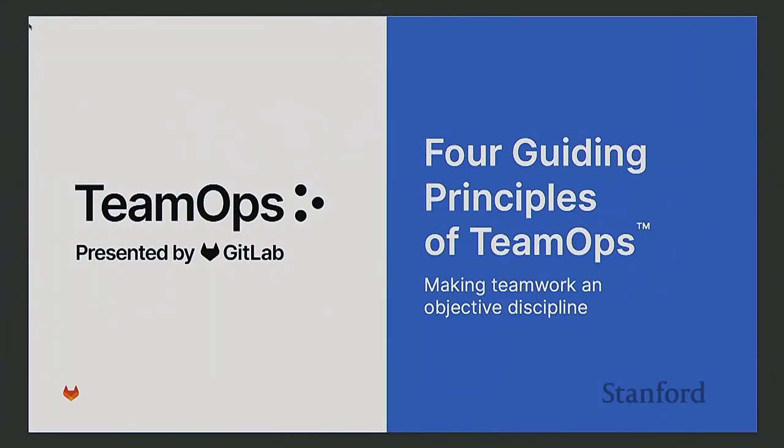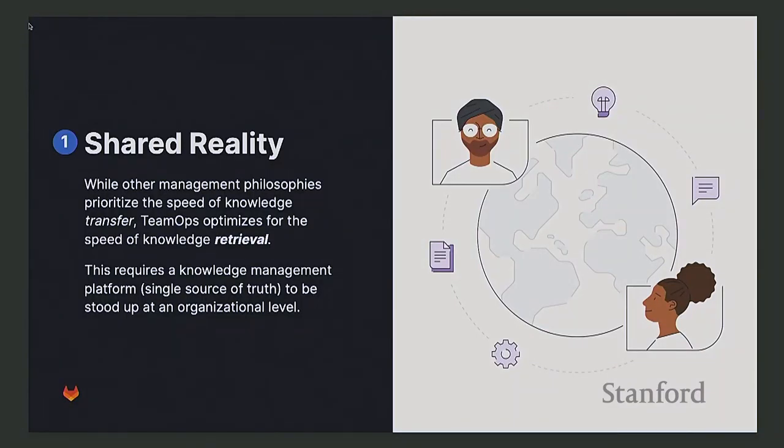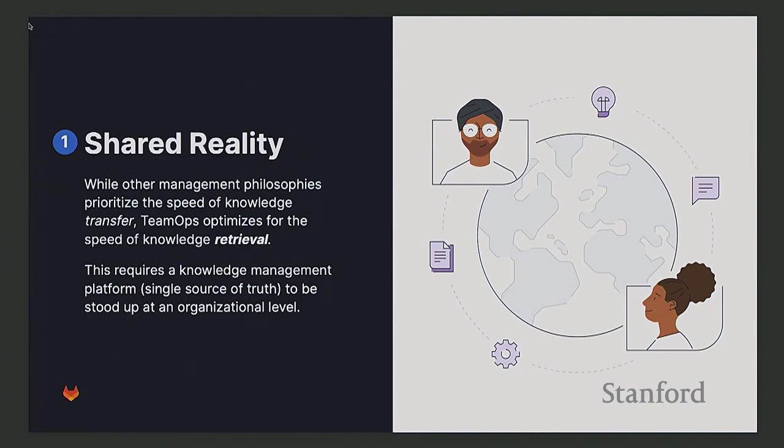It's more connected to making decisions in, we think, a more efficient and inclusive way. So, we thought of four principles for team ops. The first one is a shared reality, making sure everyone is on the same page.